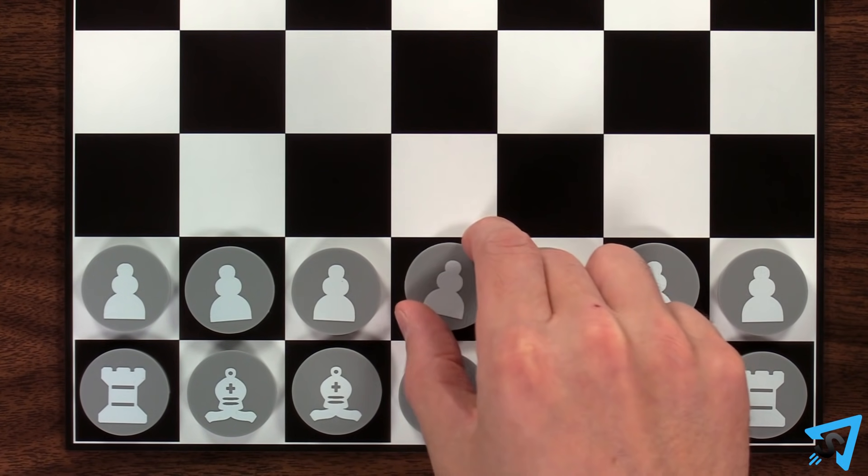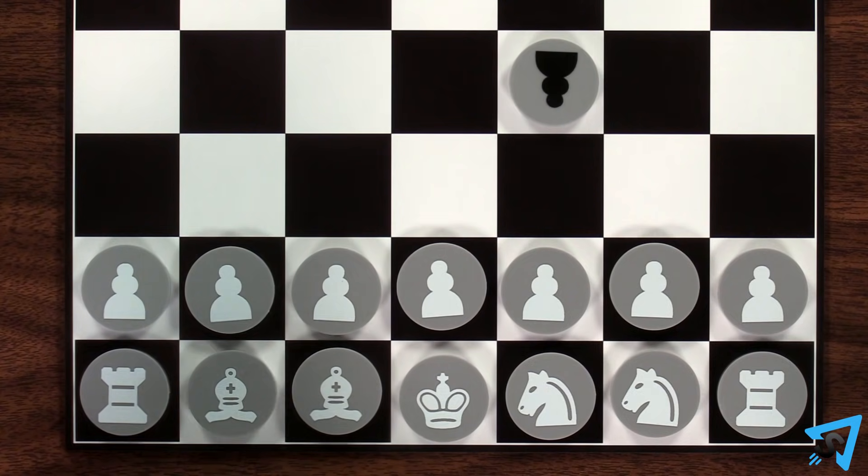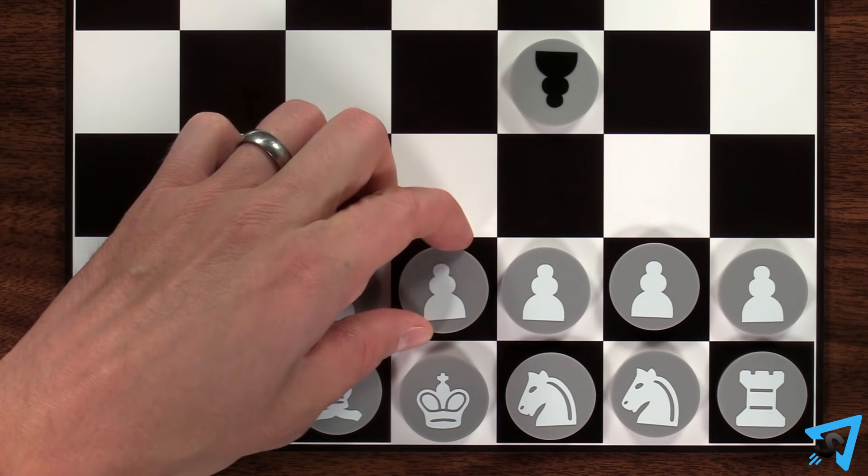Pawns are not allowed to use their initial double step move. En passant is therefore not possible.